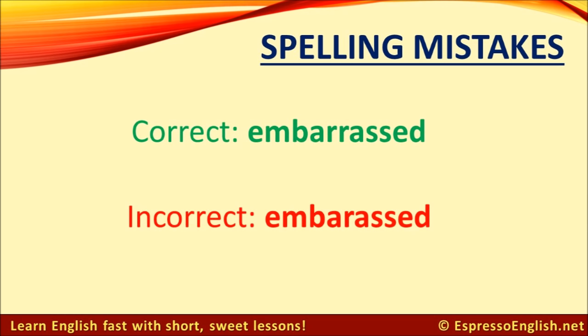If you make a mistake, you might be embarrassed. The word 'embarrassed' has two R's and two S's. That's true for the word 'embarrass,' 'embarrassed,' and 'embarrassing' — all of them have two R's and two S's.